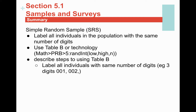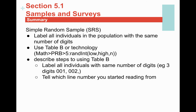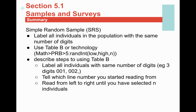Here are the steps. First, label all individuals with the same number of digits — for example, 001, 002, all the way up to whatever the last number is. The order you label them doesn't matter; alphabetical is fine. Then start on a particular line number — it doesn't matter which one, you just have to state it. On the AP exam, they'll give you an excerpt from the table or tell you which line to start on. Then read the table from left to right until you've selected n individuals. And importantly, skip repeats — in an SRS using Table B, you do skip repeats.